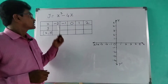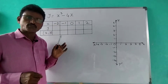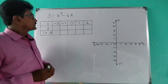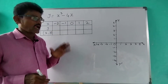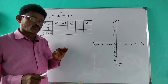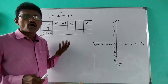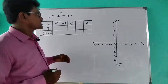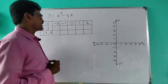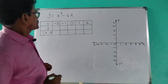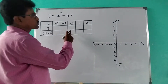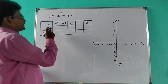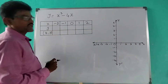Now I'm going to plot a cubic polynomial. The polynomial is y = x³ - 4x. Plot the graph and find the number of zeros. This is a cubic polynomial, so at most it has three zeros, but that is not a condition — sometimes it may have one zero, sometimes two zeros, or it may have three zeros. First we plot this graph and try to find how many zeros there are. I'm going to substitute x values: 0, 1, 2, -1, -2.